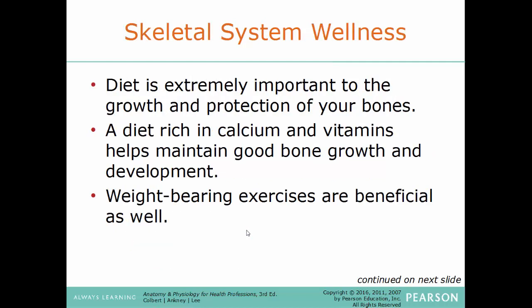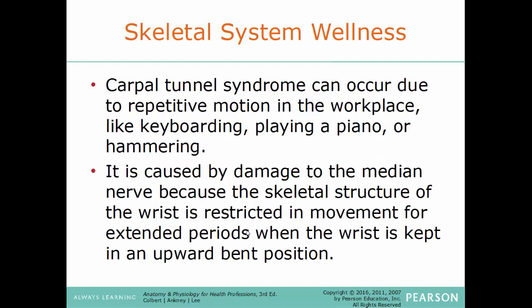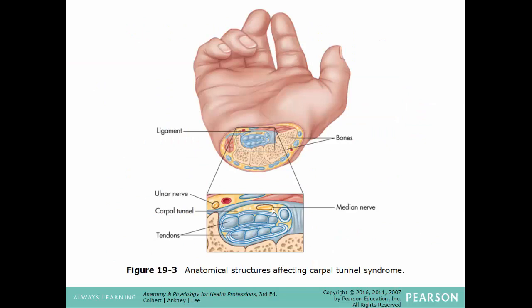Skeletal system wellness: diet is extremely important to growth and protection of bones. A diet rich in calcium and vitamins helps maintain good bone growth and development. Weight-bearing exercises are also beneficial — they not only build muscle and muscle strength but also build bone. Carpal tunnel syndrome can occur due to repetitive motion in the workplace, like working on a keyboard, piano, or hammering. It's caused by damage to the median nerve because the skeletal structure of the wrist is restricted in movement for an extended time when the wrist is kept in an upward bent position, which squeezes the median nerve causing tingling and irritation.